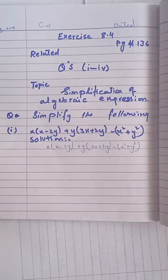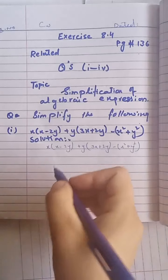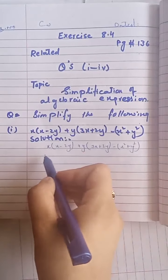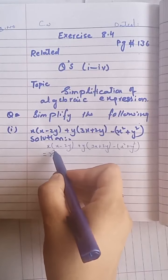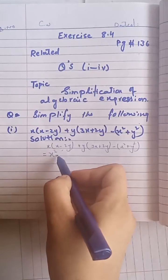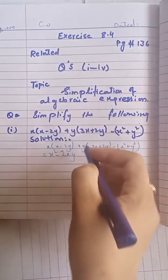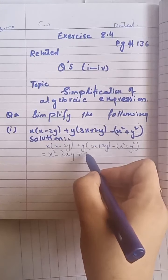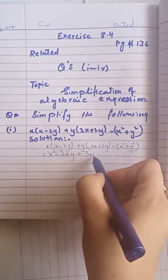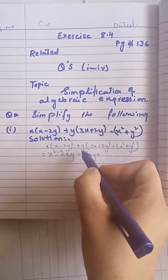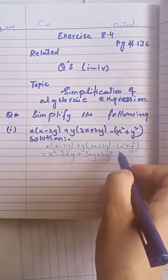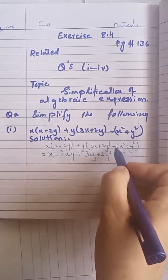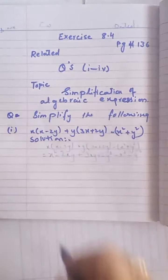In your neat copies, write exercise 8.4, page number 136. Related questions are 1 to 4, and our topic is simplification of algebraic expressions. For question 1 part one: x is multiplying all terms in the bracket, so x to the power 1 times x to the power 1 gives x squared, then minus 2xy. Then multiply y inside: you get plus 3xy, and y to the power 1 times y to the power 1 gives y squared. Open the bracket to get minus x squared minus y squared.